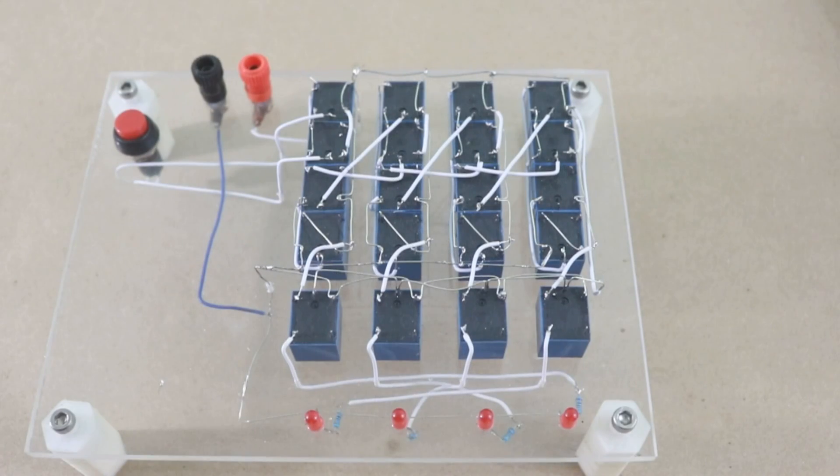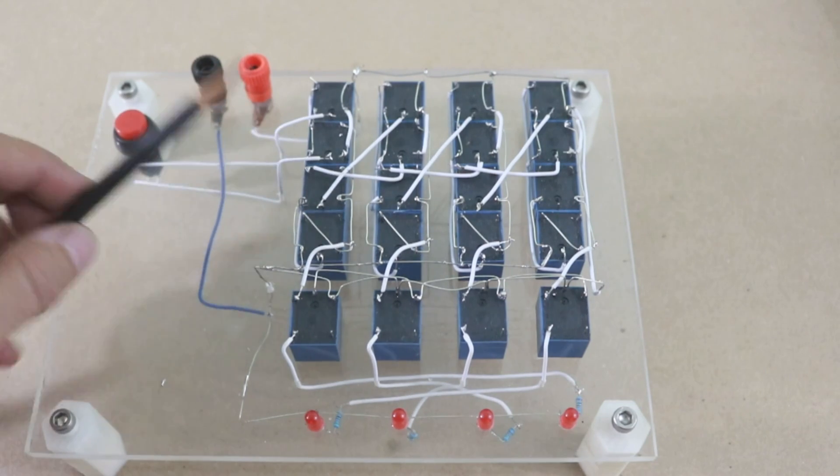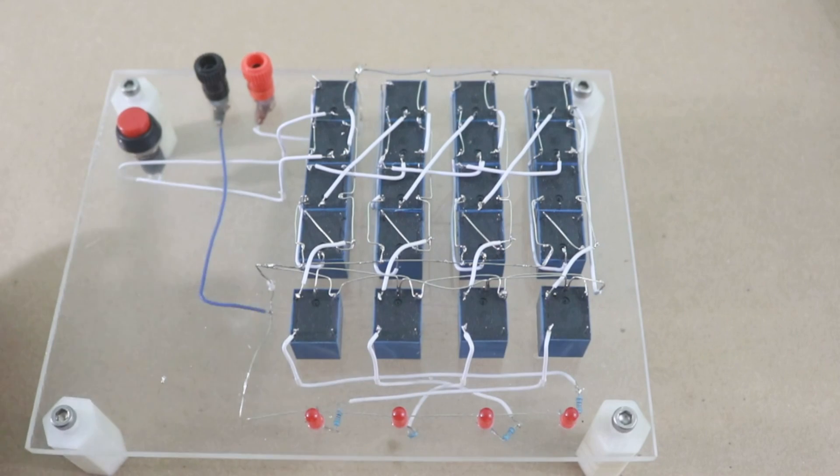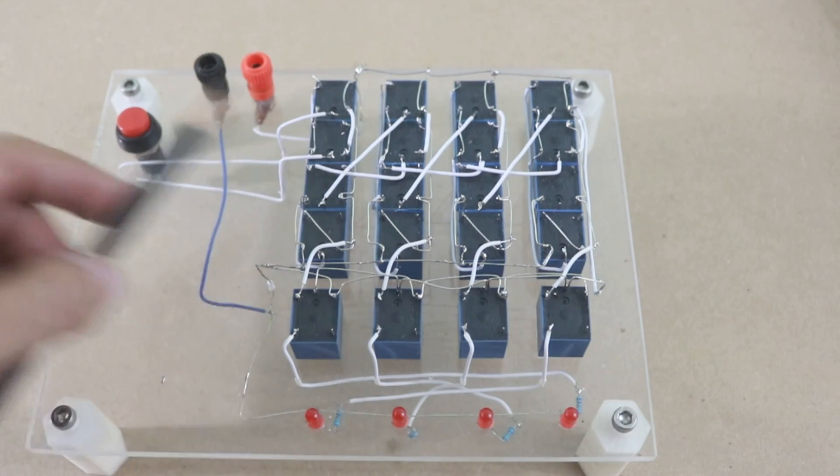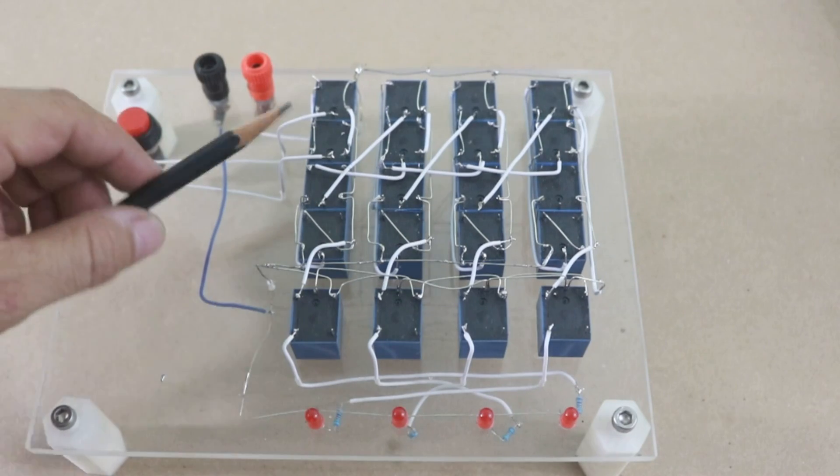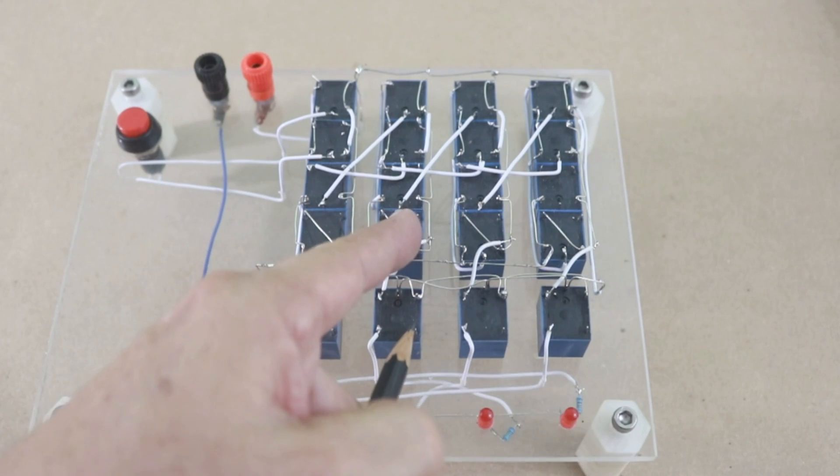So in the binary counter, here we have the first flip-flop, whose input is the switch, and as we saw before, this flip-flop divides the frequency of the button in half, but now the output of this flip-flop is fed to the second flip-flop,